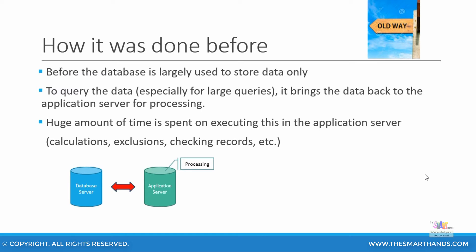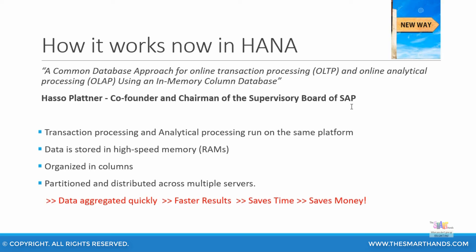Let's look at how data was analyzed before and how it's done now. Before, databases were largely used to store data only. To query data, especially for large volumes, it would take the data back to the application server for processing and then provide the information — so a huge amount of time was spent executing this. Now, all three — the application server, the database server, and the client server — reside on a single platform, making data retrieval much quicker. Transaction processing and analytical processing run on the same platform, on in-memory high-speed RAM. Data is organized into columns, partitioned, and distributed across multiple servers. Hence, data is aggregated quickly, producing faster results, which saves time and money.